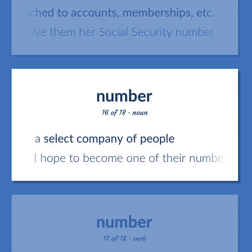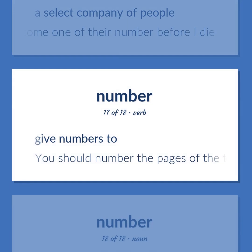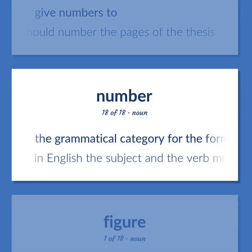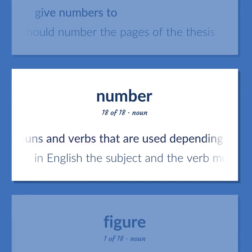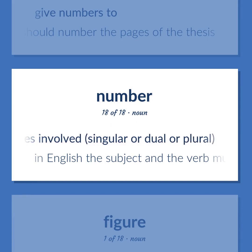A select company of people. Example: I hope to become one of their number before I die. Give numbers to. Example: You should number the pages of the thesis. The grammatical category for the forms of nouns, pronouns, and verbs that are used depending on the number of entities involved — singular, dual, or plural. Example: In English, the subject and the verb must agree in number.